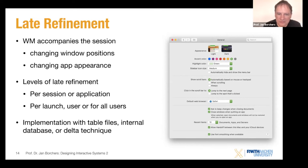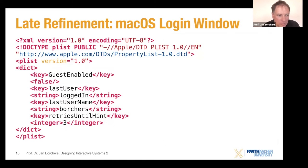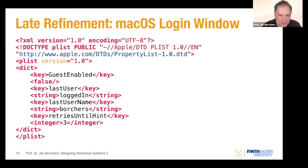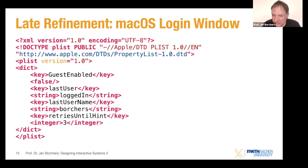Here's an example of late refinement in the form of a human-readable structured document file. This is actually from the system-wide preferences on macOS — taken from /Library/Preferences/com.apple.loginwindow.plist. It's named in a fairly self-evident way. Let's read through it and see how much we can just guess simply by reading the text, even if we've never seen this format before.